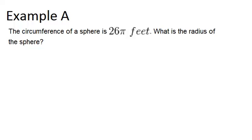In example A, it says the circumference of a sphere is 26π feet. What is the radius of the sphere? So the circumference of the sphere means the circumference of the biggest circle that goes through the sphere, which would be called the great circle.